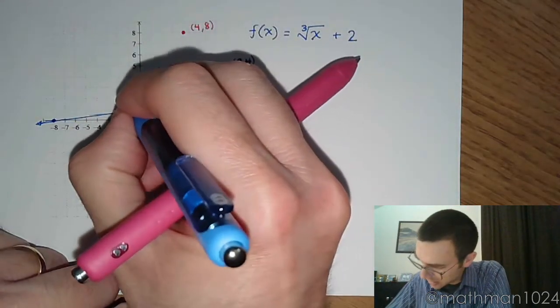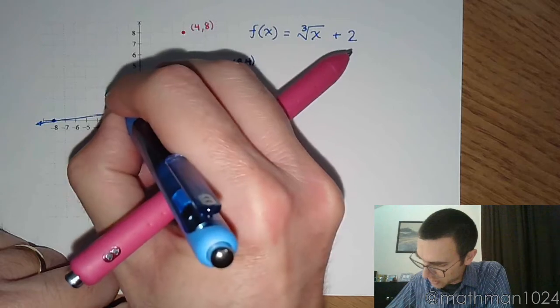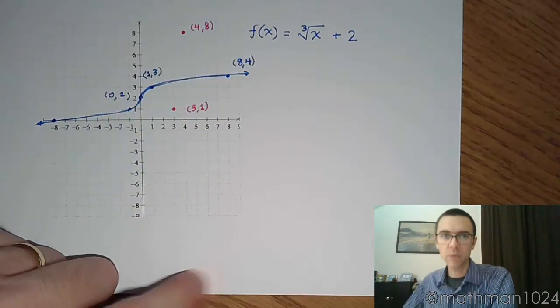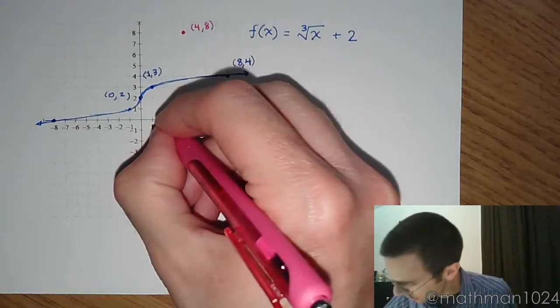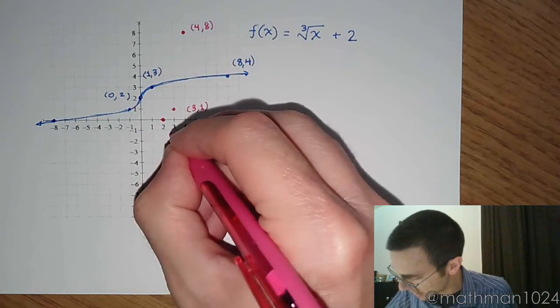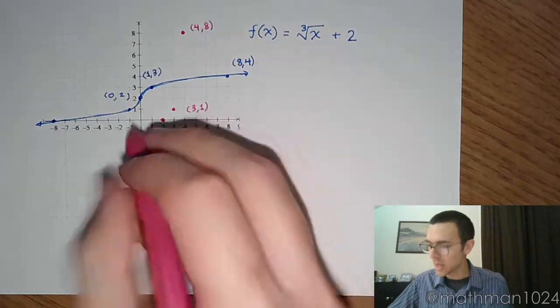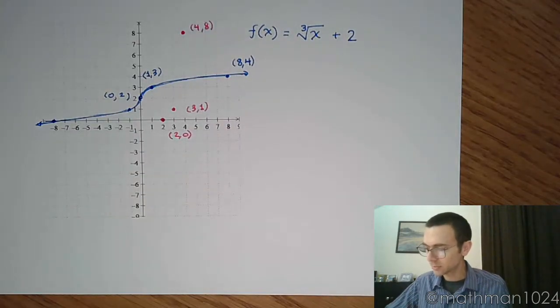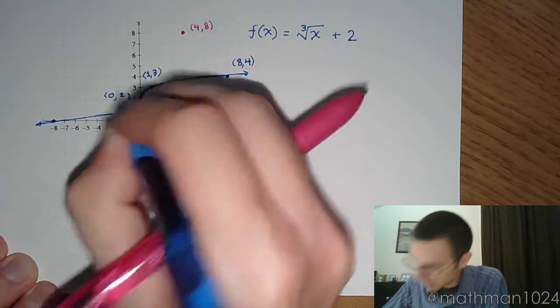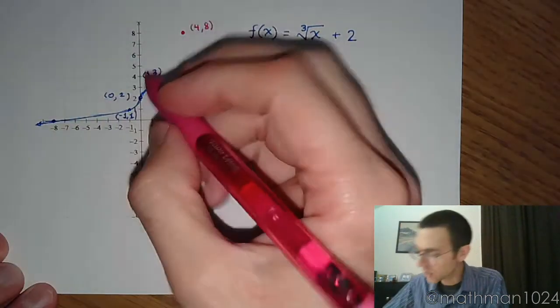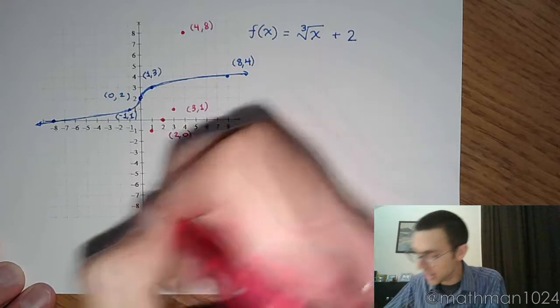We have the ordered pair (0, 2) for the blue guy, which means for his inverse, we would have the ordered pair (2, 0). So there's that guy. And then we have (-1, 1). Swap those coordinates around, and you would have (1, -1).